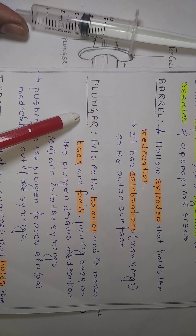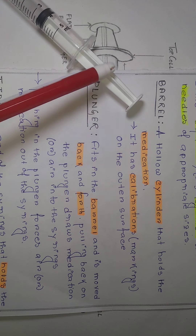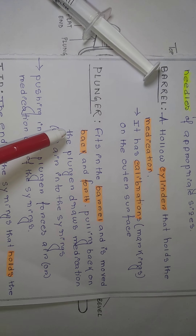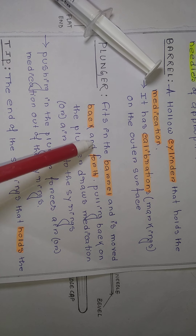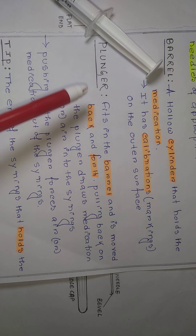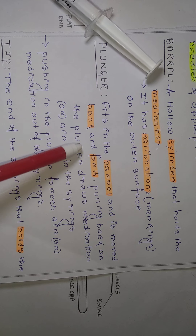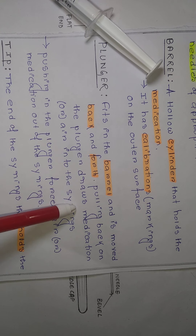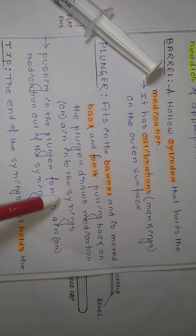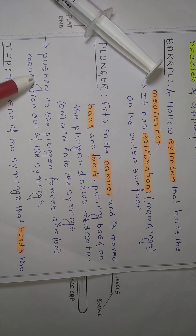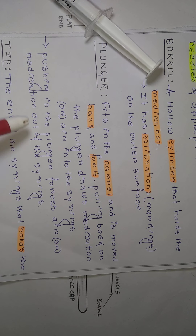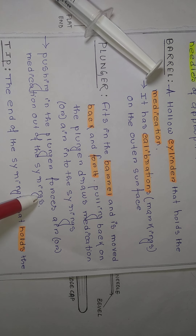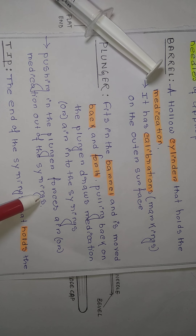And what is the plunger? This portion is called plunger. The plunger fits in the barrel and moves back and forward. Pulling back on the plunger draws medication or air into the syringe. And when you go for pushing, the plunger forces air or medication out of the syringe, for injecting into the patient body at the time of injection.